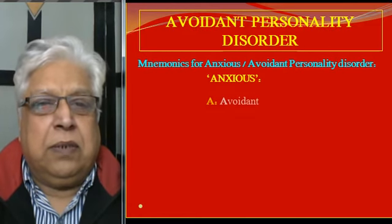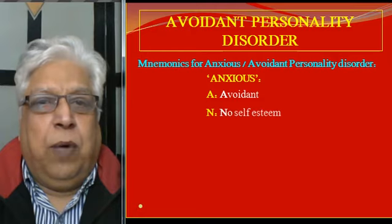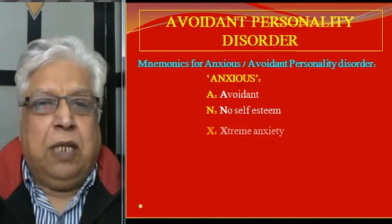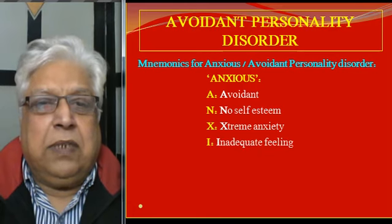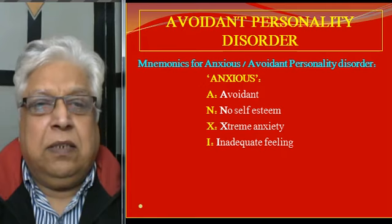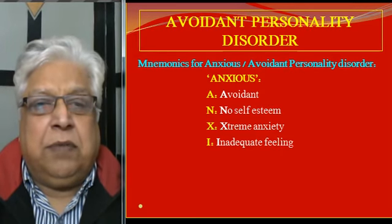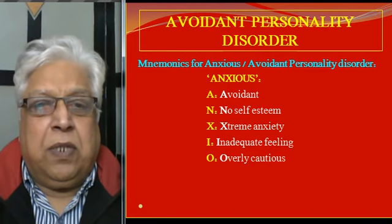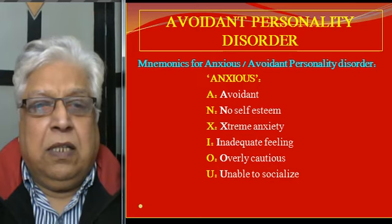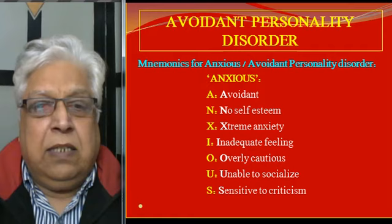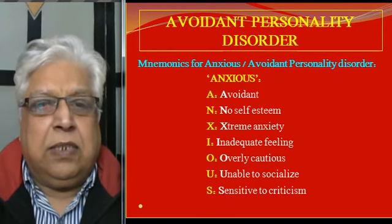To remember avoidant personality, we have a small mnemonic which is ANXIOUS: A stands for avoidant, N stands for no self-esteem, X stands for extreme anxiety, I stands for inadequate feelings, O stands for overly cautious, U stands for unable to solicit, and S stands for sensitive to criticism.